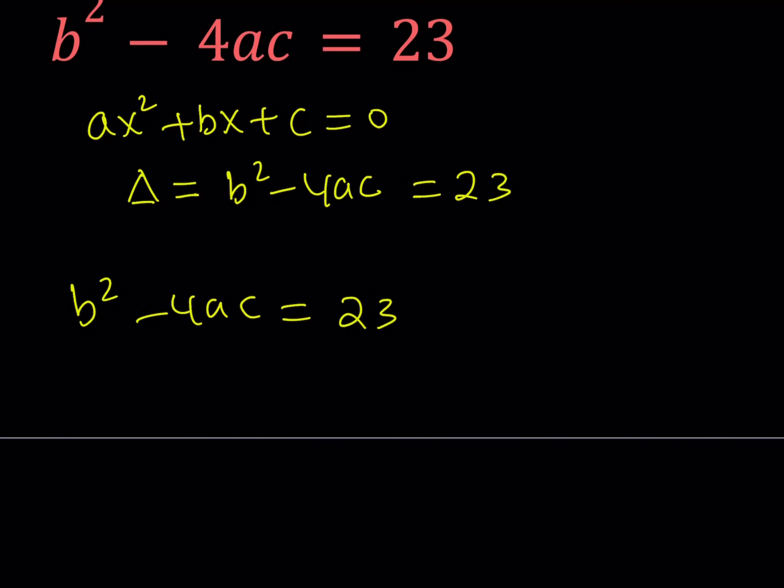If you look at this equation carefully, you're going to notice that 4 times ac is a multiple of 4, therefore it's always even. So this is an even number. Now, we also know that b squared minus an even number is 23, which is an odd number. So when do you get an odd number? If you subtract an even number from another number, that number also needs to be odd. In other words, odd minus even is equal to odd.